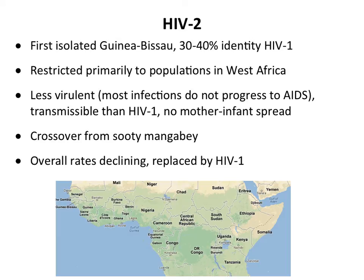HIV-2 was isolated not long after HIV-1, first in Guinea-Bissau - in western Africa, very different from the central African origin of HIV-1. Today it remains restricted to western Africa and hasn't spread elsewhere. It's less virulent - you can live your whole life infected and die of something else. It's not very transmissible, and there's no mother-to-infant spread. HIV-2 originated from a sooty mangabey crossing over into a human; these are kept as pets in western Africa. HIV-2 is now declining in western Africa, being replaced by HIV-1.